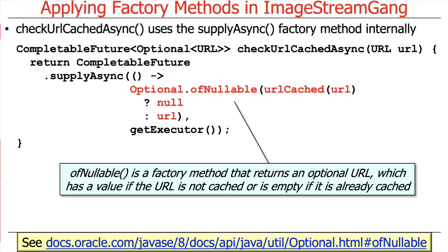Let's take a closer look at this action that gets registered. What it's doing is calling the urlCached method, which is going to be called asynchronously in a background thread. It's going to check the return value: if urlCached gives back true, that means we've already seen this URL — it is cached — so we return null because we want it to be ignored. But if it's not been seen already, it returns false, so we want to give it the URL. We pass either null or URL to the ofNullable factory method.